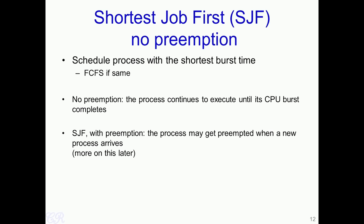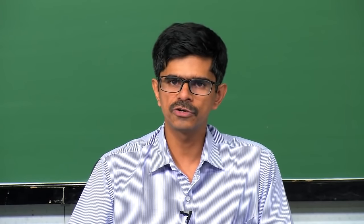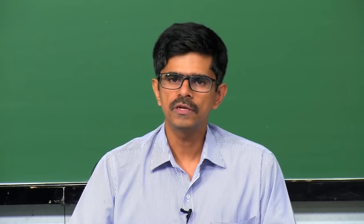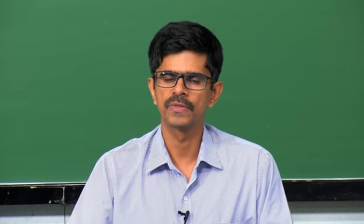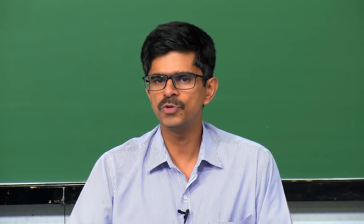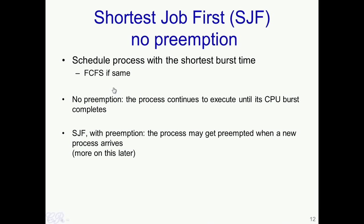Let us look at the Shortest Job First (SJF) scheduling algorithm, where the process with the shortest CPU burst time is scheduled before others. If two processes have the same burst time, standard FCFS is used. There are two variants: SJF without preemption, where the process continues until its burst completes, and SJF with preemption, where a process may be preempted when a new shorter process arrives.